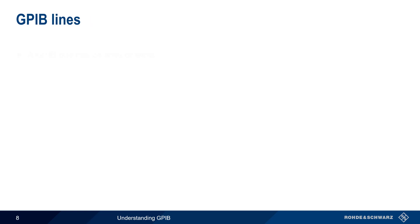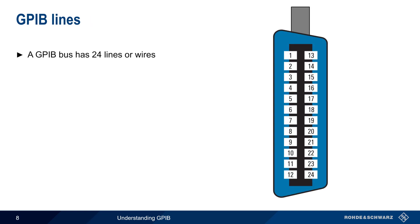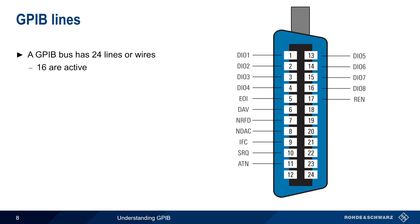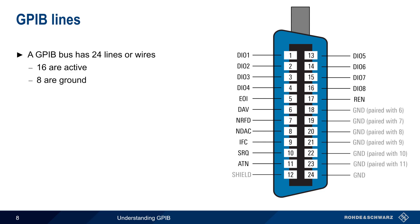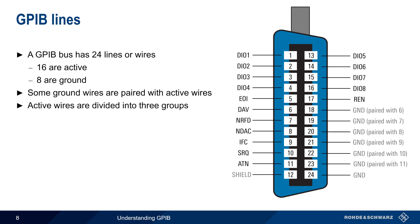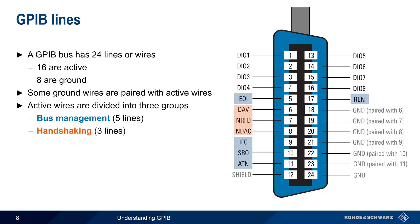GPIB is a multi-wire bus. Specifically, the bus consists of 24 wires, 16 of which are active and 8 of which are ground. Note that some of these ground wires are paired with certain active wires. The active wires are divided into three separate groups based on their purpose or function: bus management consists of five lines, the handshaking procedure uses three lines, and eight lines are used for data transfer.